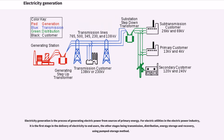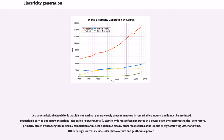Electricity generation is the process of generating electric power from sources of primary energy. For electric utilities in the electric power industry, it is the first stage in the delivery of electricity to end users, the other stages being transmission, distribution, energy storage and recovery using pump storage method. A characteristic of electricity is that it is not a primary energy freely present in nature in remarkable amounts and it must be produced. Production is carried out in power stations, also called power plants.